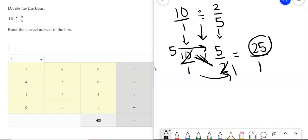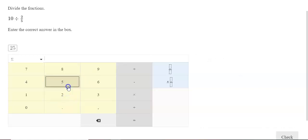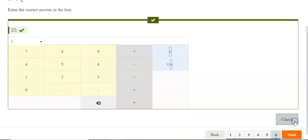Remember, that's a whole number because it's over one. We get twenty-five. Let's check our answer. And we are done with our check understanding today.